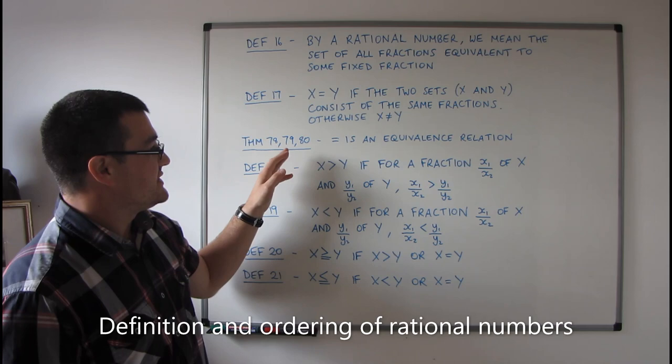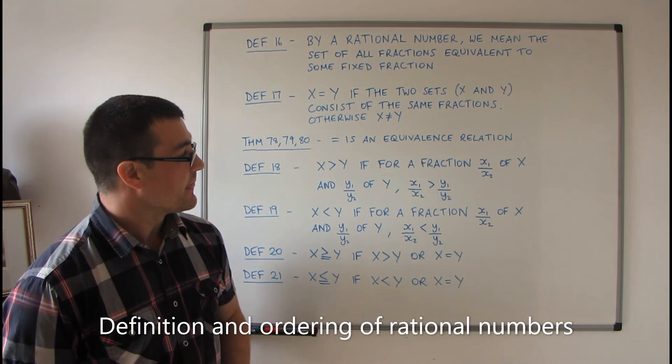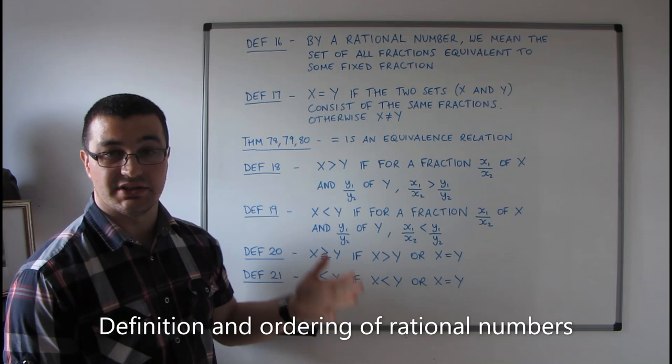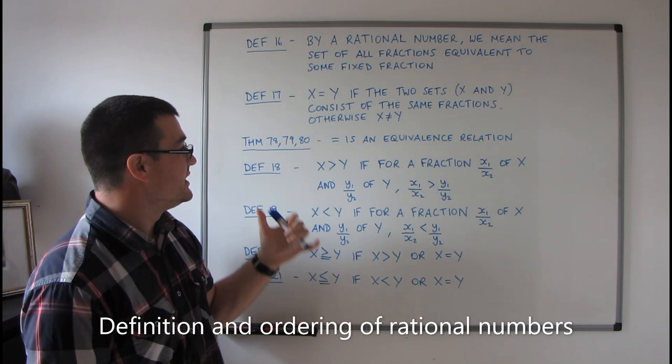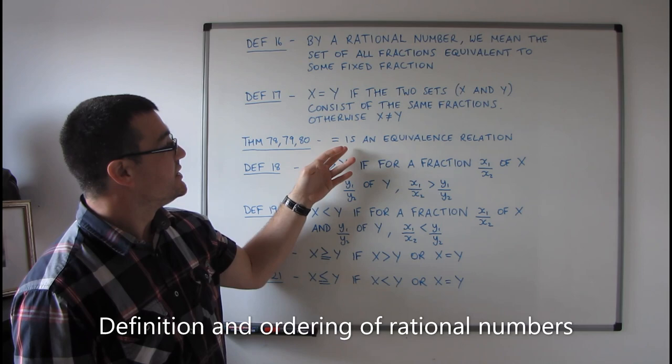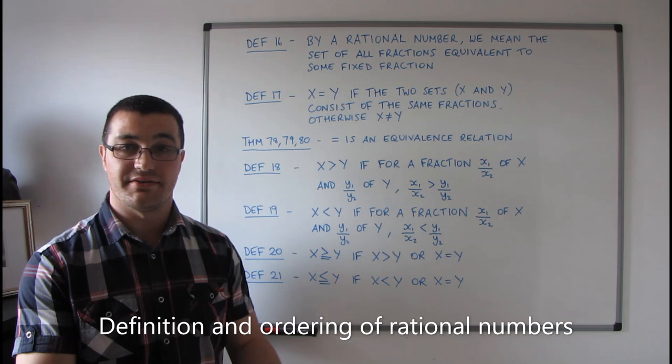Theorems 78, 79, and 80: equality of rational numbers is an equivalence relation. These theorems are so trivial that Landau doesn't even bother to give them proofs — he just says they're trivial. And they kind of are, because they follow straight from the fact that rational numbers are, by their nature, equivalence classes of fractions.